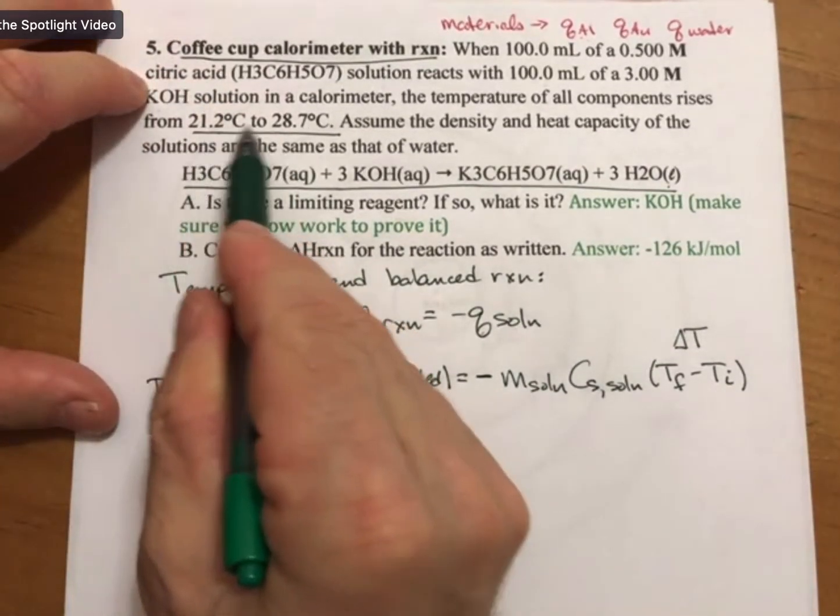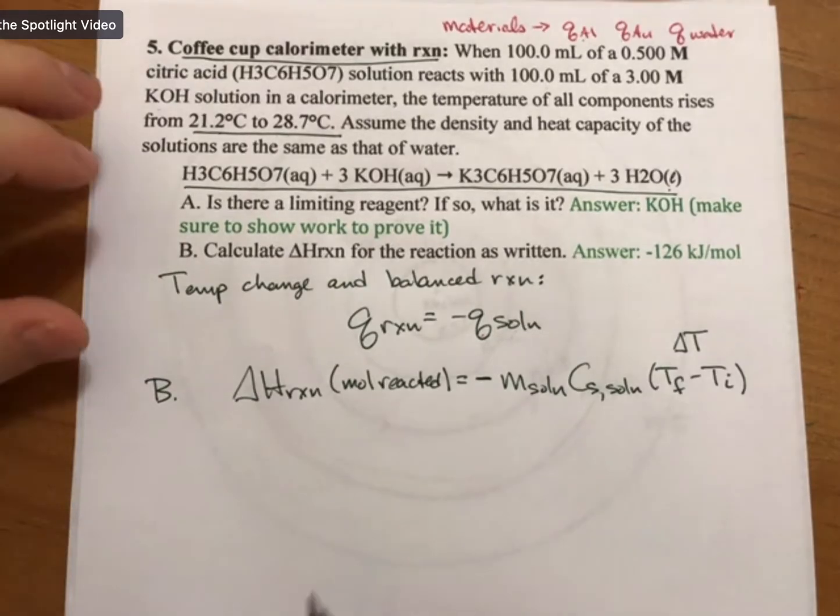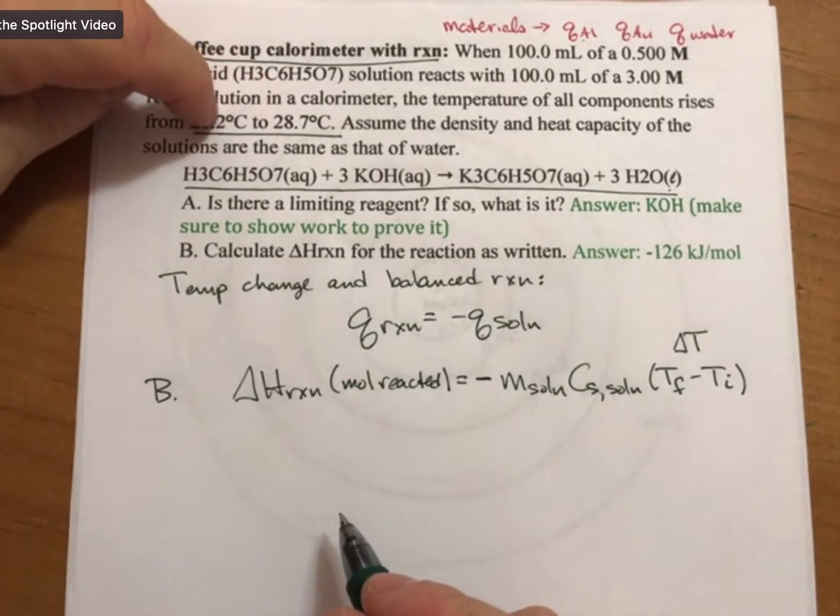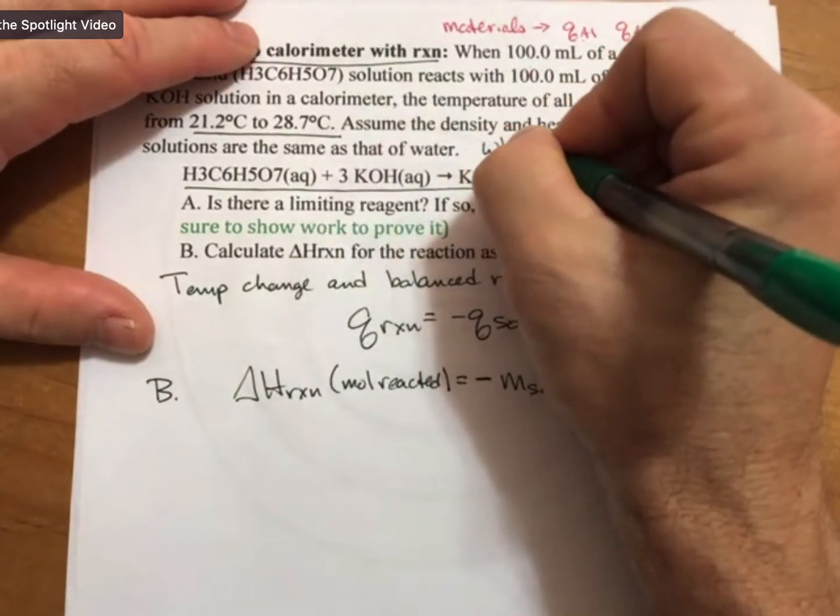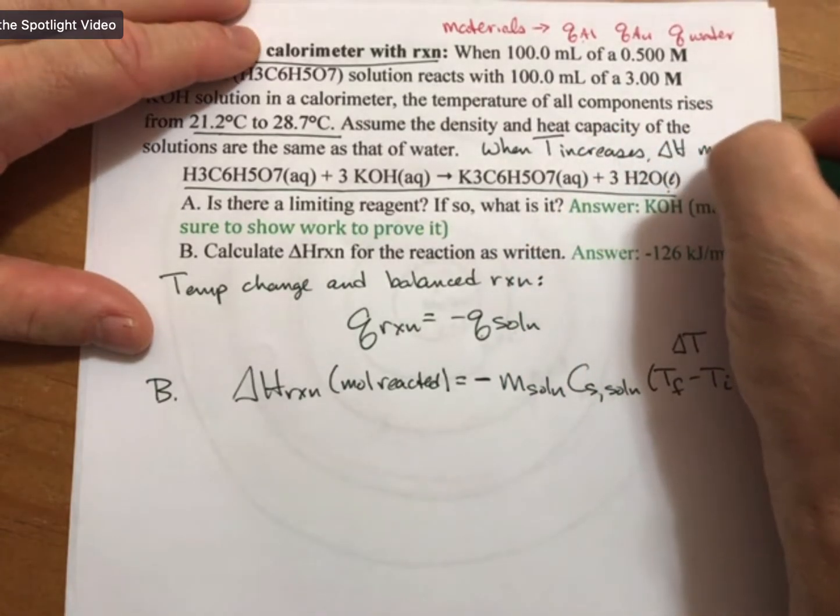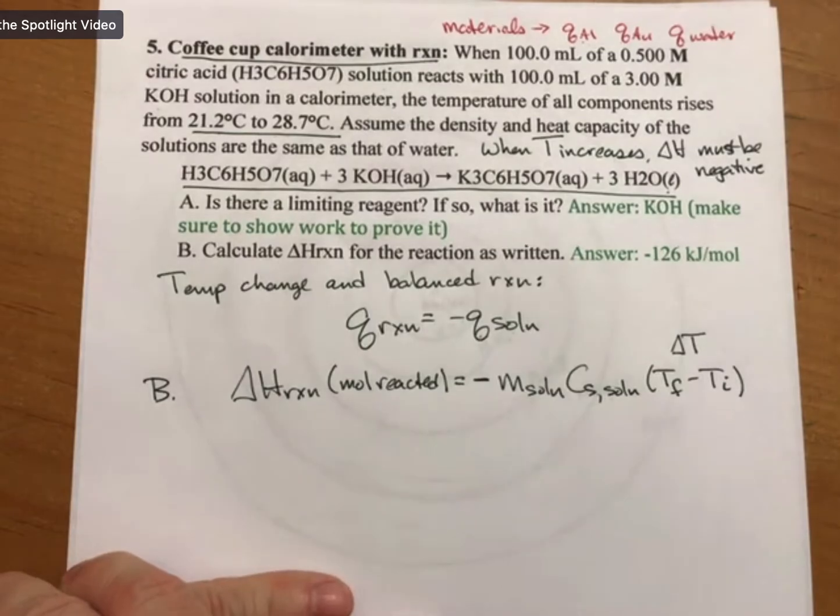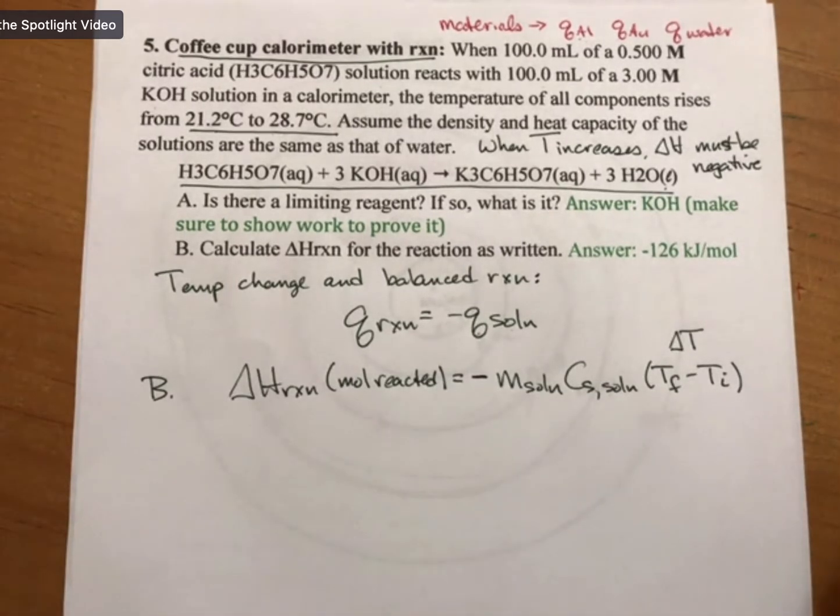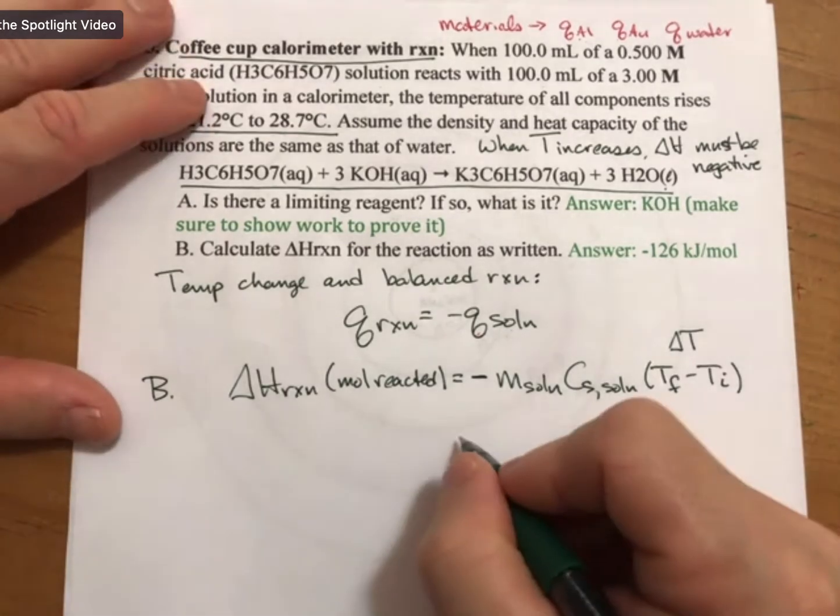So we have our two temperatures. And note that temperature is increasing. So one thing to keep in mind is that when temperature increases, delta H must be negative. When T increases, delta H must be negative. And I wish that we had you in the lab to experience this because it's really cool and it really drives it home. But we don't.